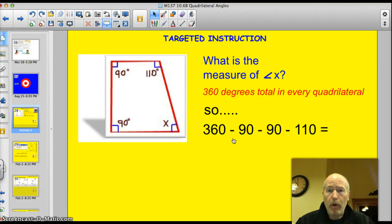Alright, here we go. What is the measure of angle x? Take a look at this quadrilateral. So we've got 90, 110, 90, and we've got one missing angle here. Well, there are 360 degrees total in every quadrilateral. I've got that red there for you. That's the trick to everything.